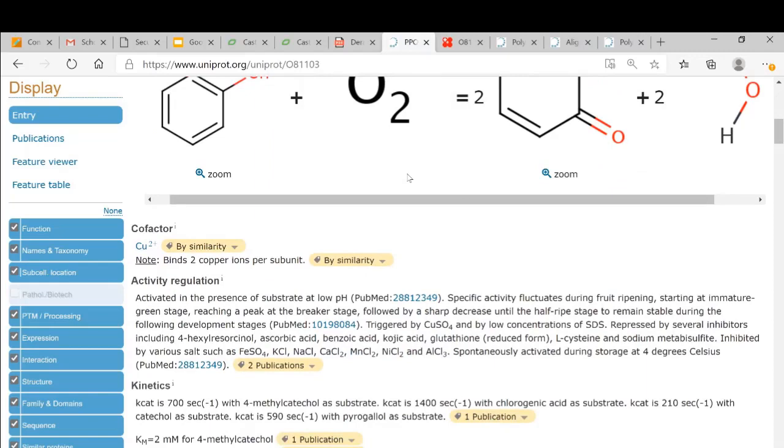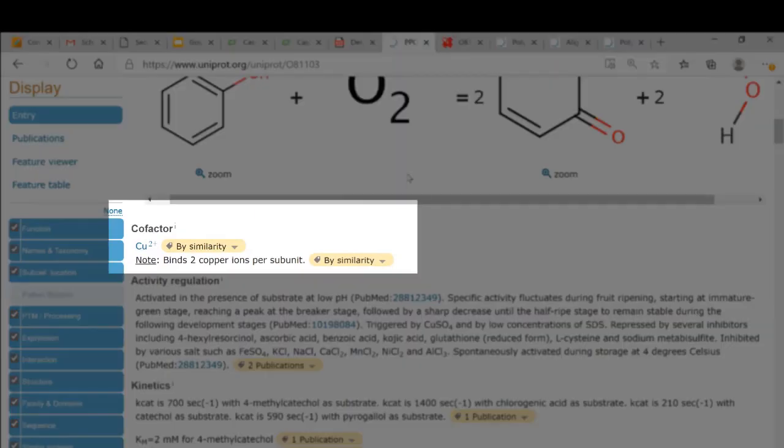A cofactor is a non-amino acid component of the protein. And in this case, there are two copper ions embedded inside the protein.